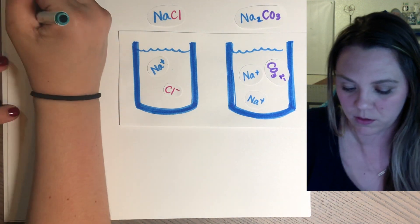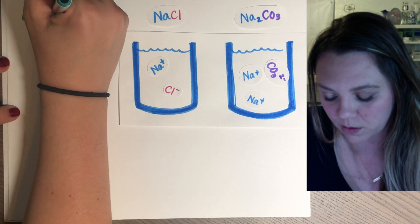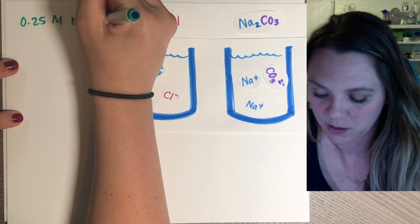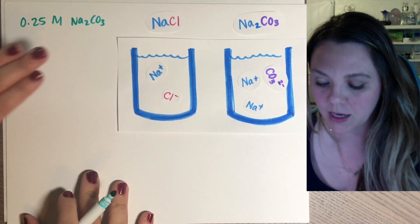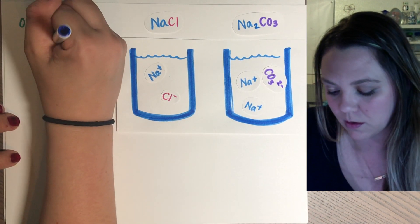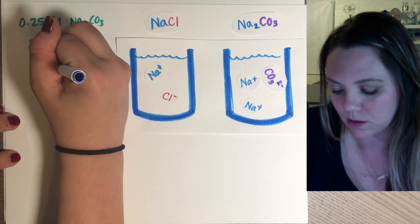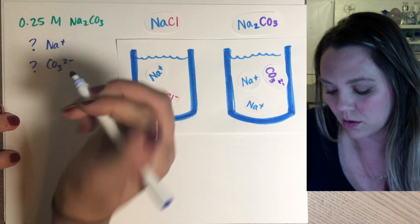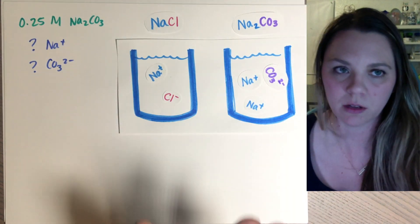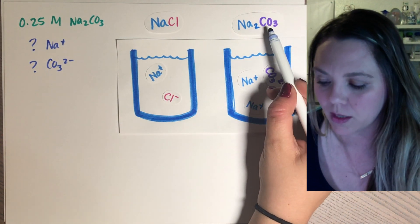So I'll just use that 0.25 molar of Na2CO3. And now I need to figure out what's the molarity of sodium and what's the molarity of carbonate. So you can basically do it a couple ways, you can just look at the picture and think about it.